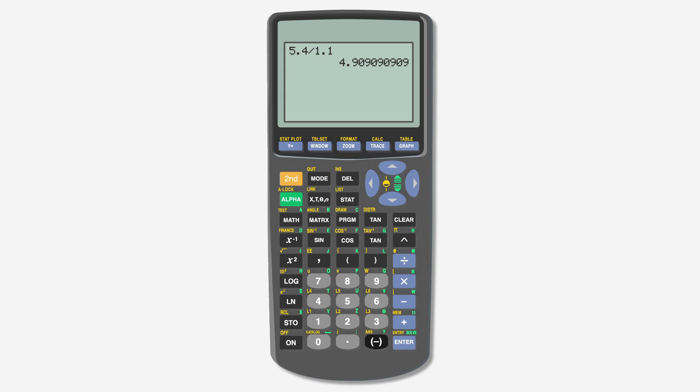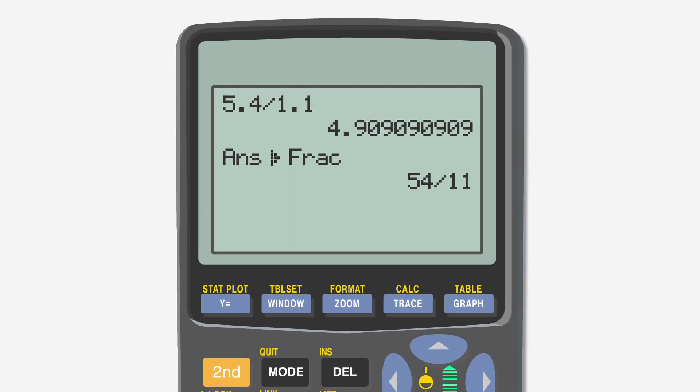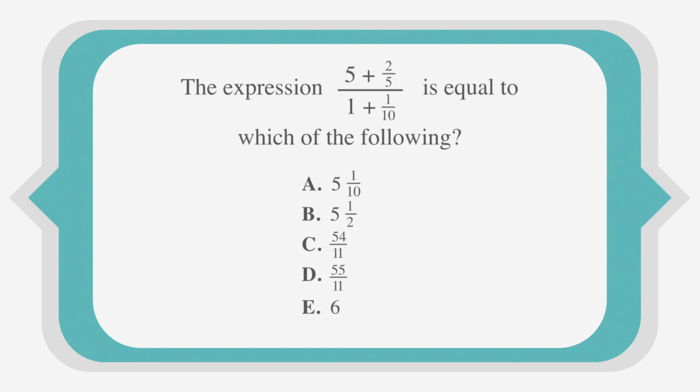Here, we input the division problem, which gives us the decimal. Then we press 2nd, then answer, then math, then 1, and finally enter. This gives us the fraction of 54 over 11. All we need to do now is go over the answer choices to find the correct one. And the winner is answer choice C, 54 over 11. Circle it.